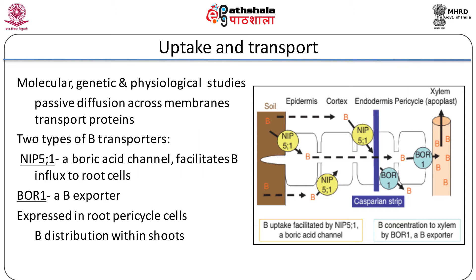NIP5;1 increases the permeability of boric acid to cell membranes under boron limitation and facilitates influx of boron from the soil into root cells. Boron is exported by BOR1 out of the cells against the concentration gradient towards the xylem. Coordinated expression patterns of BOR1 and NIP5;1 are essential for efficient transcellular transport, as NIP5;1 possibly facilitates influx following the concentration gradient that BOR1 generates. Expression of both NIP5;1 and BOR1 is decreased by transcriptional and post-transcriptional regulation respectively under high levels of boron supply. To avoid overloading high concentrations to the shoots, down-regulation of NIP5;1 and BOR1 is beneficial.